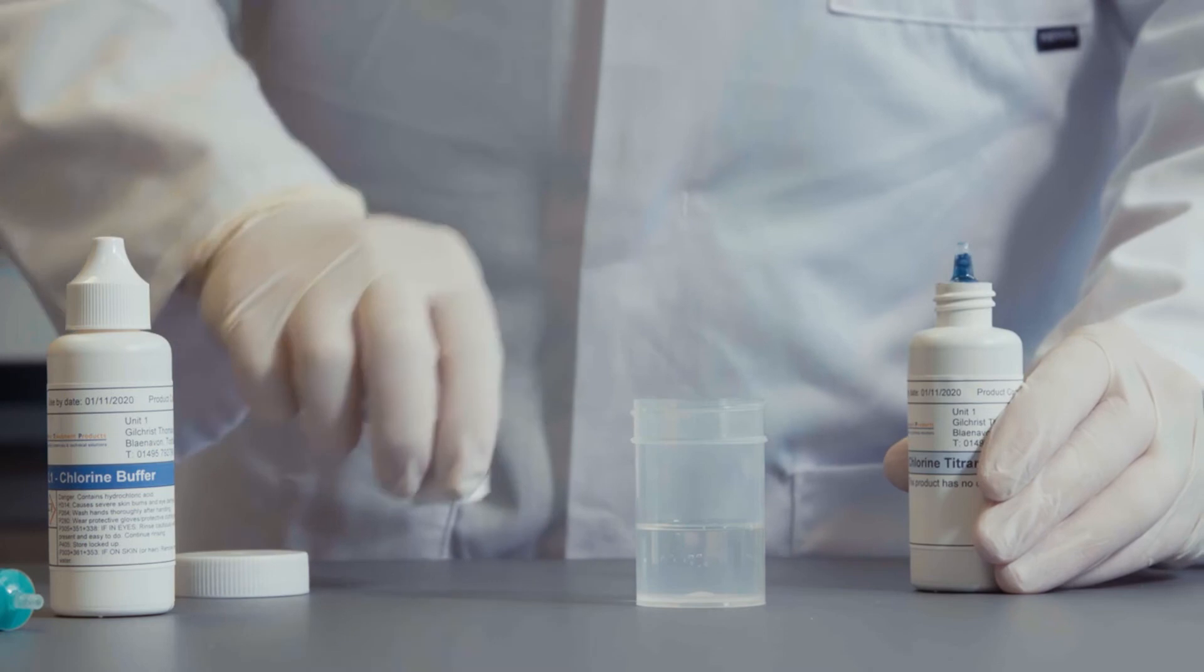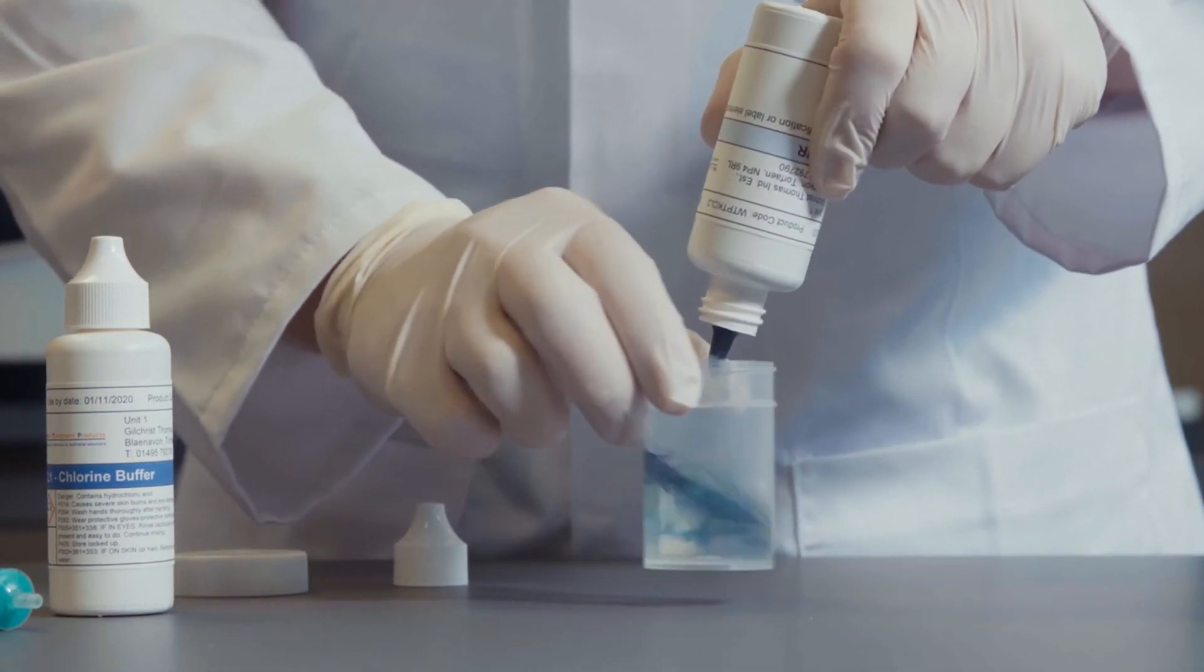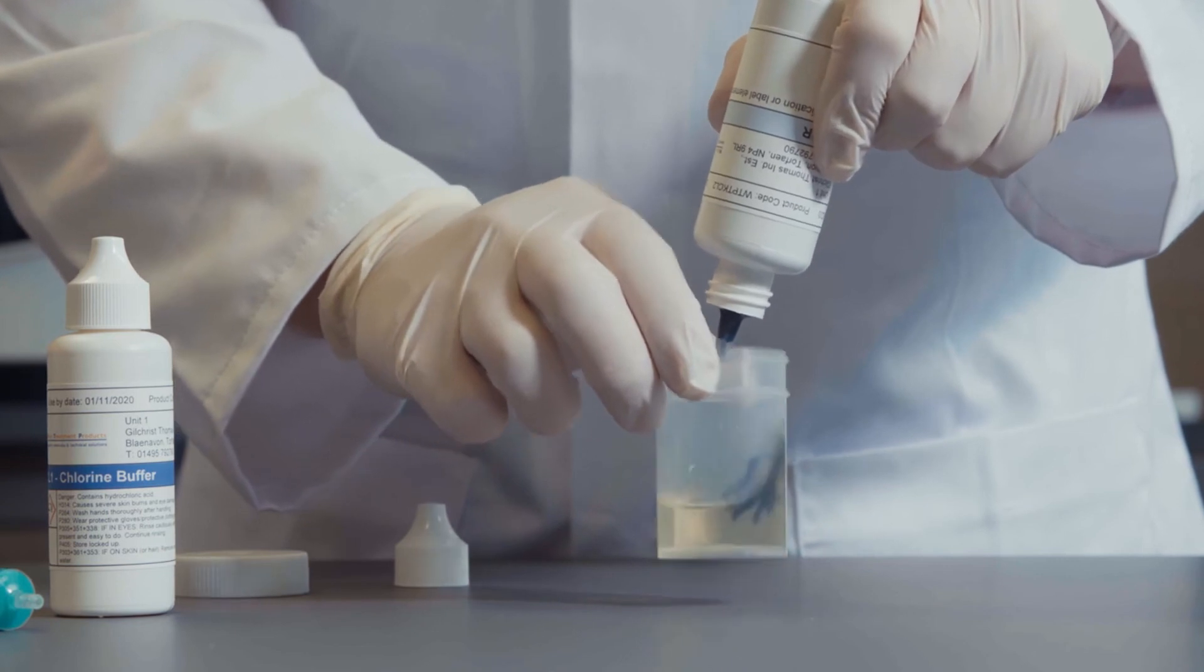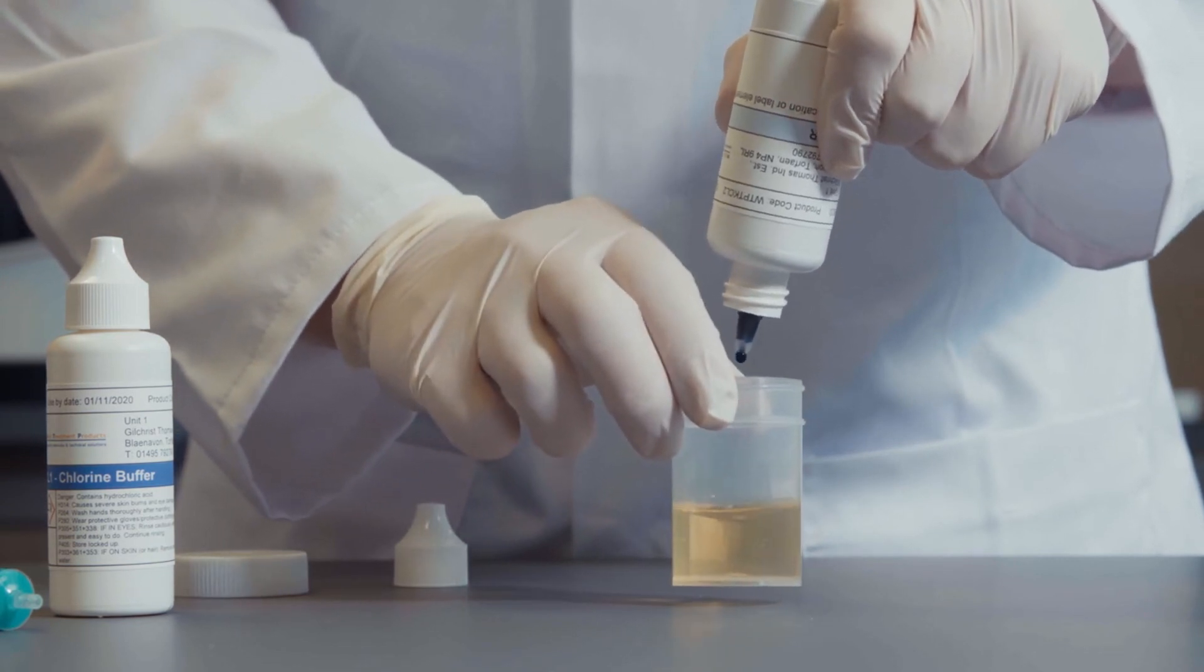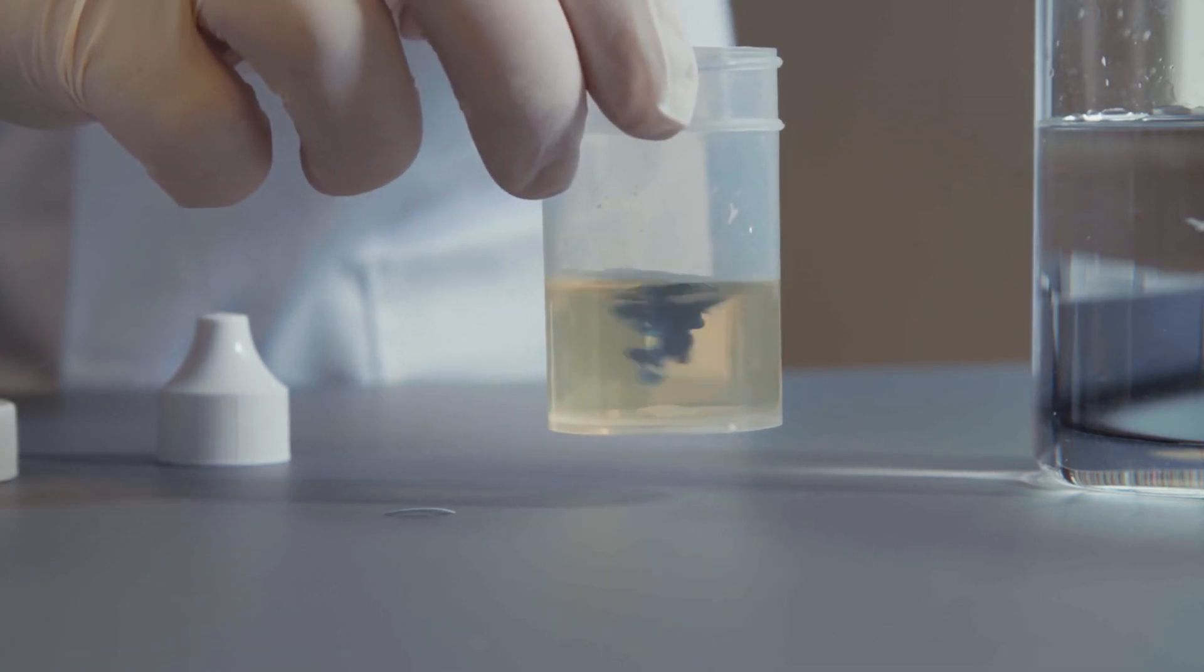Take the CL2 Chlorine Titrant and add it one drop at a time, ensuring the sample is mixed after the addition of each drop. Continue to add CL2 Chlorine Titrant one drop at a time until the sample turns a permanent blue or green.